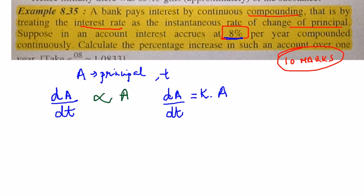So we can write this equation as dA/dt is equal to 0.08, because he is given k is 8%, that is the rate of interest is 8%. So dA/dt is 0.08 into A.